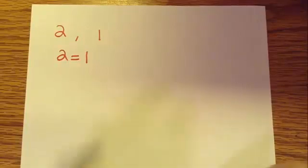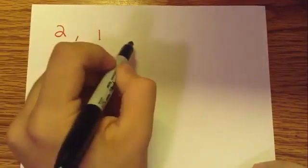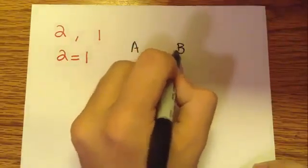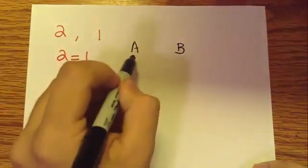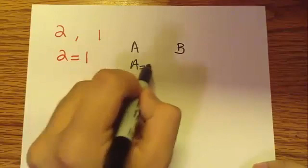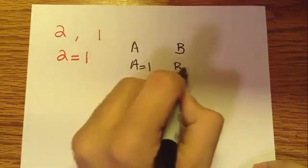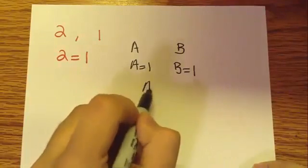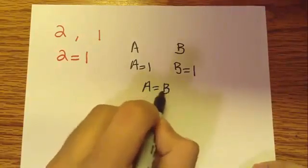All right, so I have two variables. I'm just going to call them A, and I'm going to call the other one B. All right, and I'm going to just say A equals 1, and then B equals 1. All right, so far so good. And I'm just going to say that A equals B.